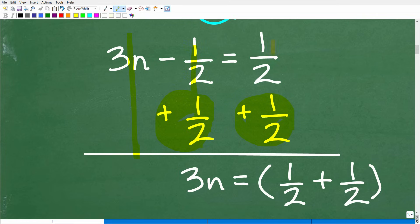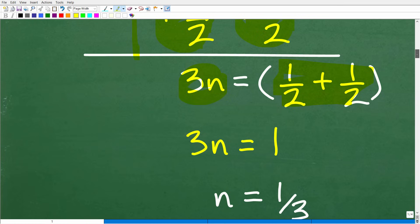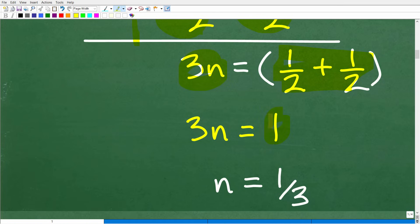Okay, so now we just add down in a column manner. 3n plus nothing is 3n. Negative 1 half plus 1 half is 0. I don't need to write that. And 1 half plus 1 half is what? Well, we'll figure that out, but hopefully the answer is obvious. 1 half plus 1 half is 1. Okay, so now we have 3n is equal to 1.